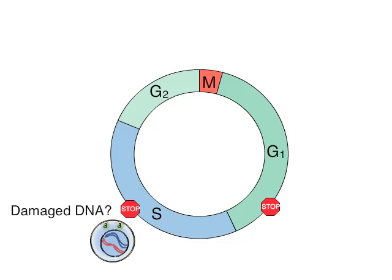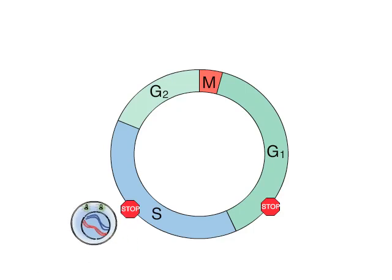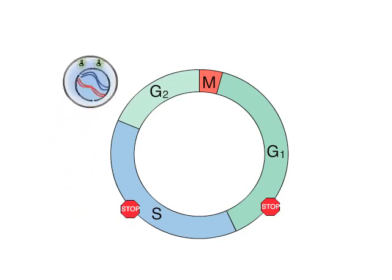In addition, the S phase checkpoint provides a quality control monitor to promote the repair of any errors that occur during DNA replication, such as the incorporation of incorrect bases or incomplete replication of segments of DNA. A DNA damage checkpoint in G2